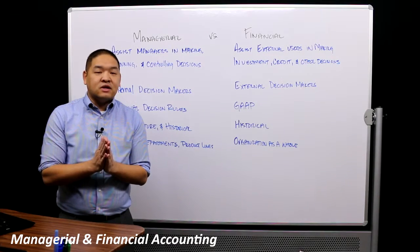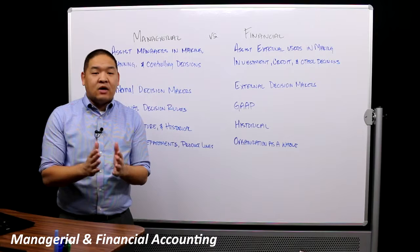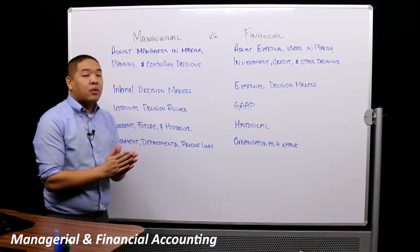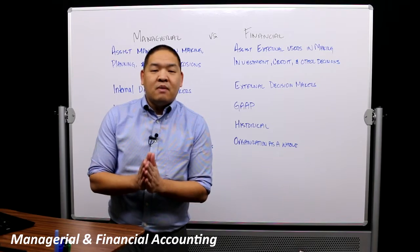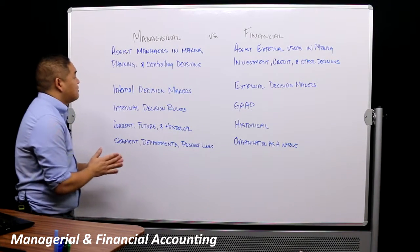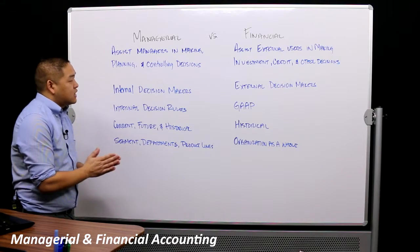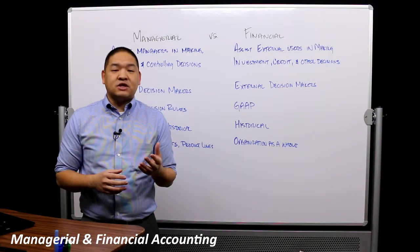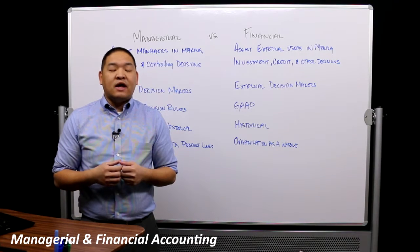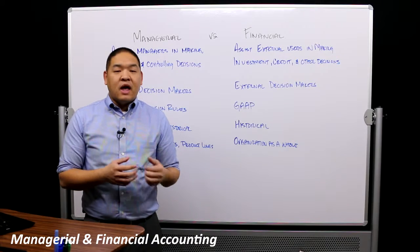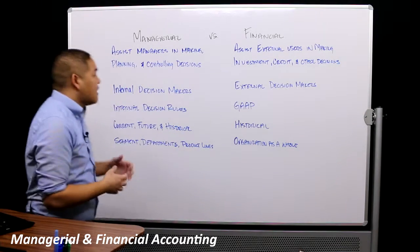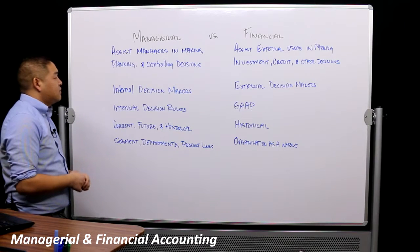We're not necessarily talking about two sets of financial statements or two completely different topics. All accounting can be financial or managerial — we're really talking about the difference in how we report things to different people. When we talk about managerial accounting, we're talking about assisting managers in making planning and controlling decisions. As a manager, you want information to help you make decisions, figure out if those decisions are working, and understand what's going on in your organization.